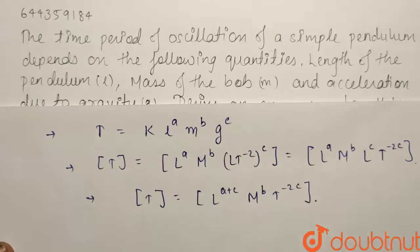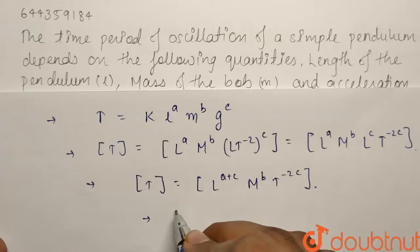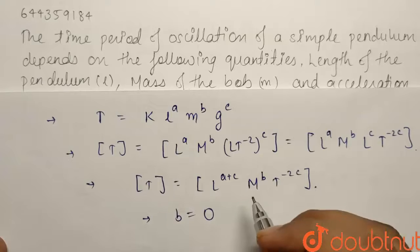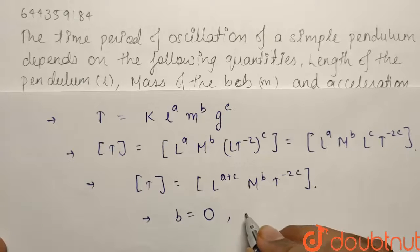Now simply comparing we can see that the mass M has no dimension in LHS, so simply b has to be equals to 0. We are comparing the dimension in LHS and RHS and similarly the dimension of time is equals to 1 in our LHS and minus 2c in RHS. So minus 2c equals to 1.